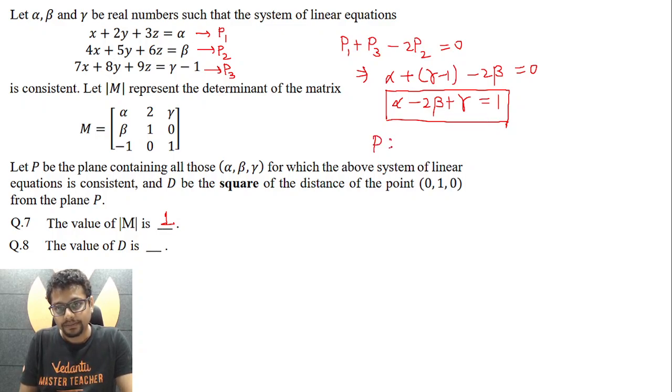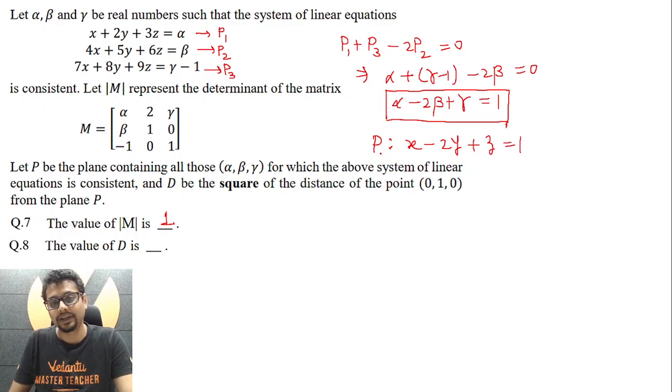Now what about this plane P? So alpha is supposed to be the x coordinate, beta is supposed to be the y coordinate, gamma is supposed to be the z coordinate. So we have x minus 2y plus z equal to 1.